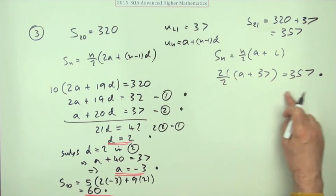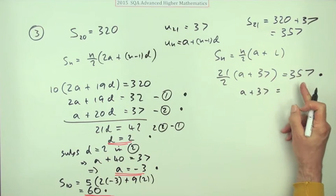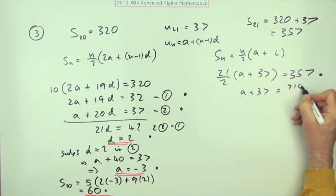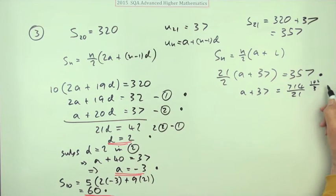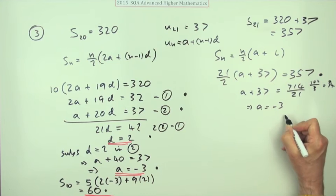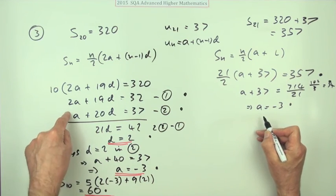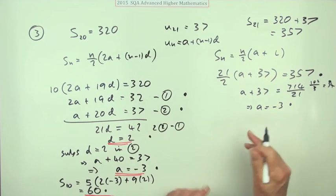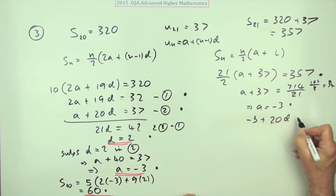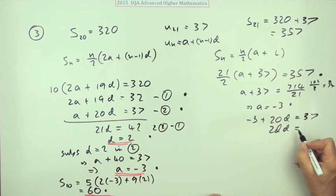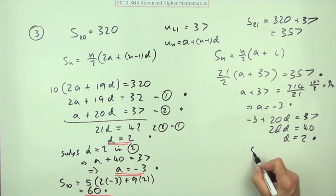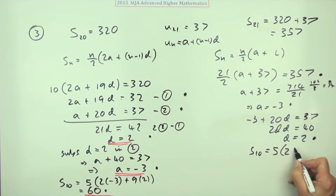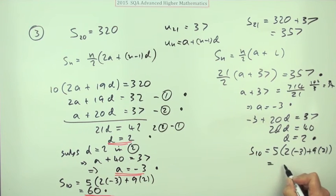Substituting into S_21 = 21/2 × (a + 37) = 357. So a + 37 = 714/21 = 34, giving a = −3 as before. Then using the 21st term formula: −3 + 20d = 37, so 20d = 40, and d = 2. Substituting back gives S_10 = 5 × (−6 + 18) = 60, the same answer as before.